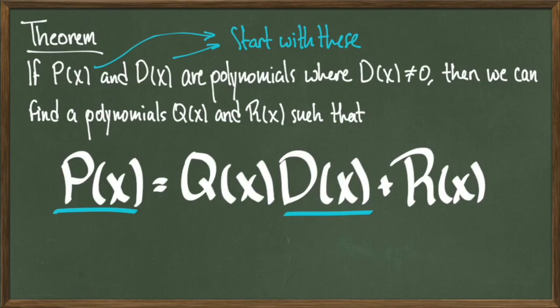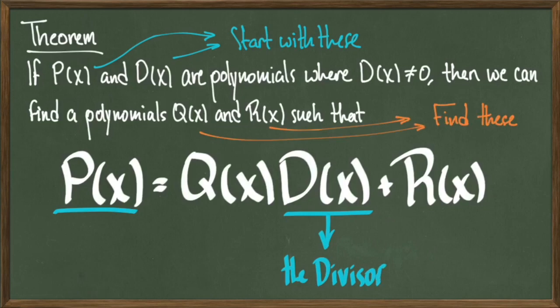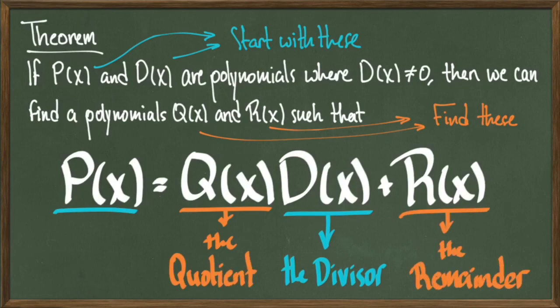We start with these and we find the rest. D in this case will be called the divisor. And when we find Q and R, Q will be called the quotient and R will be called the remainder. Sometimes the remainder term comes out to be zero, which means that the divisor divides evenly into the polynomial. Other times the remainder is non-zero, but it will always have a degree less than the divisor. There is a long division setup, but we'll begin with some simple cases.